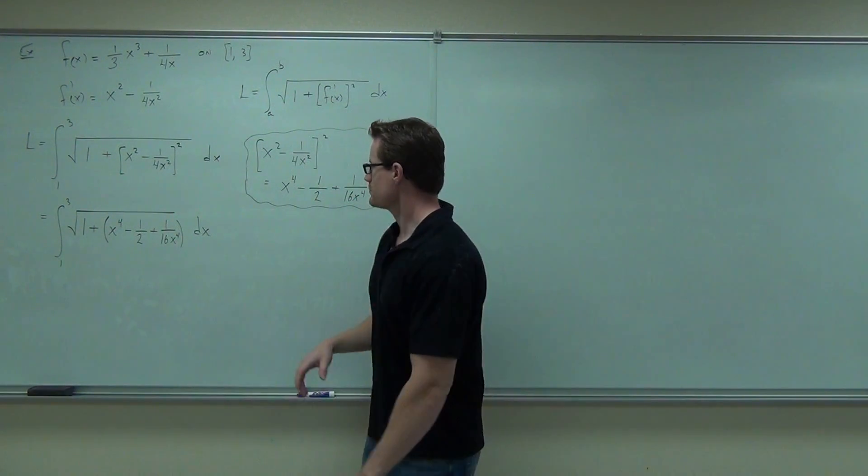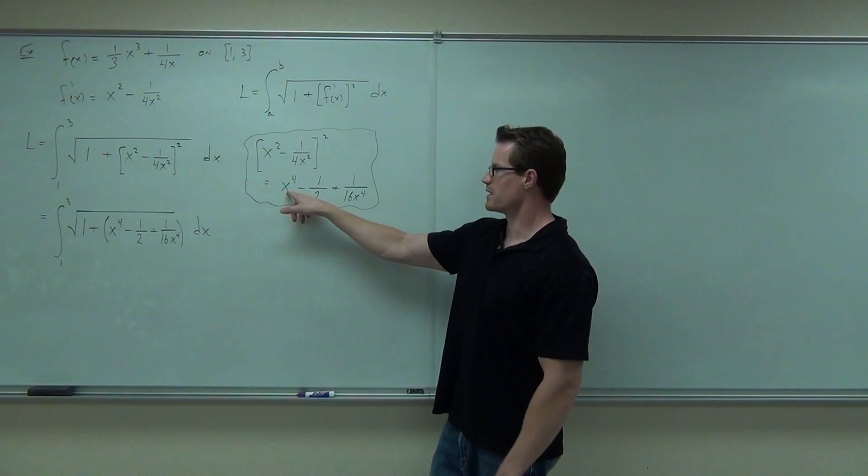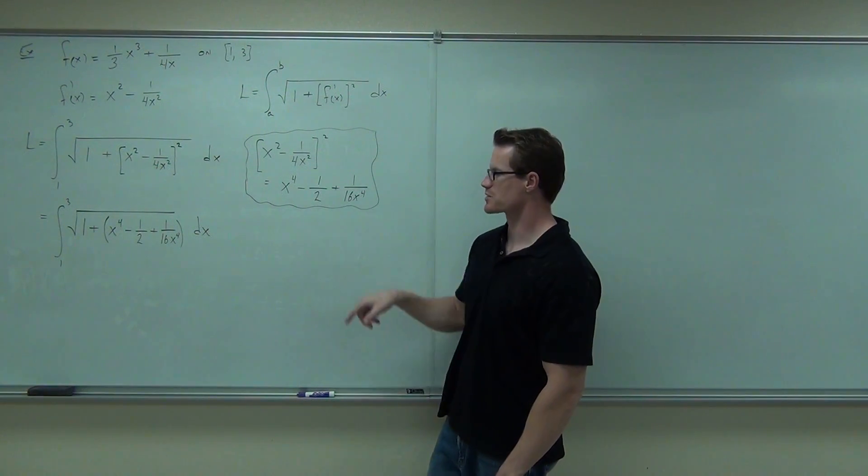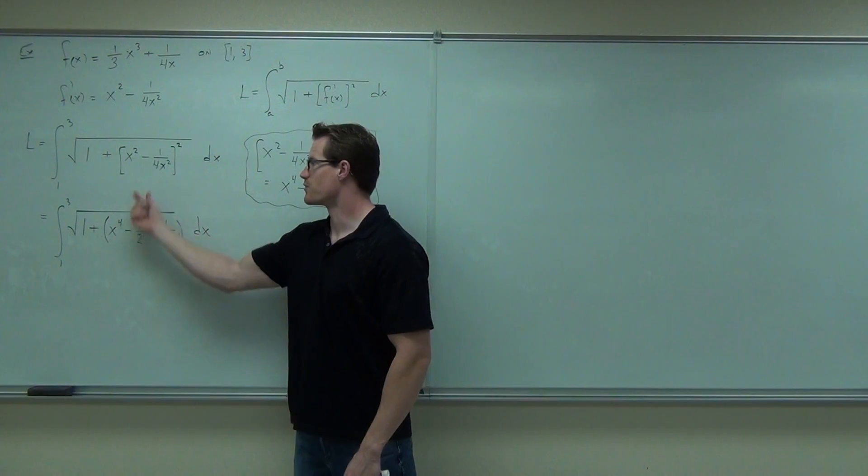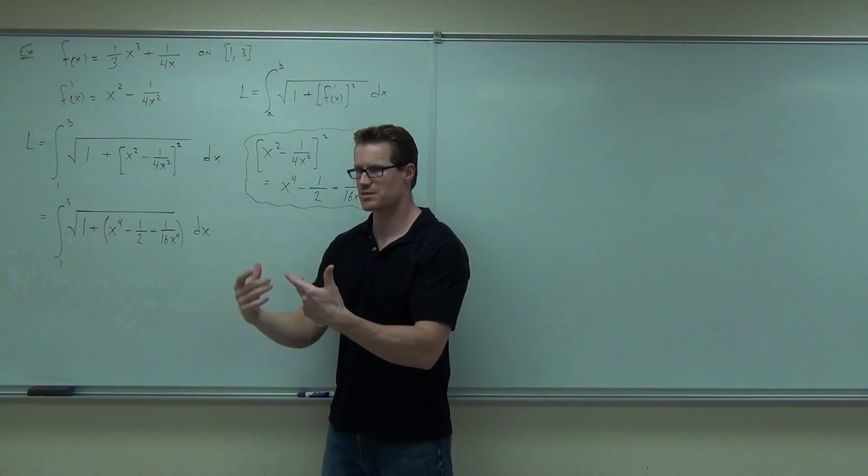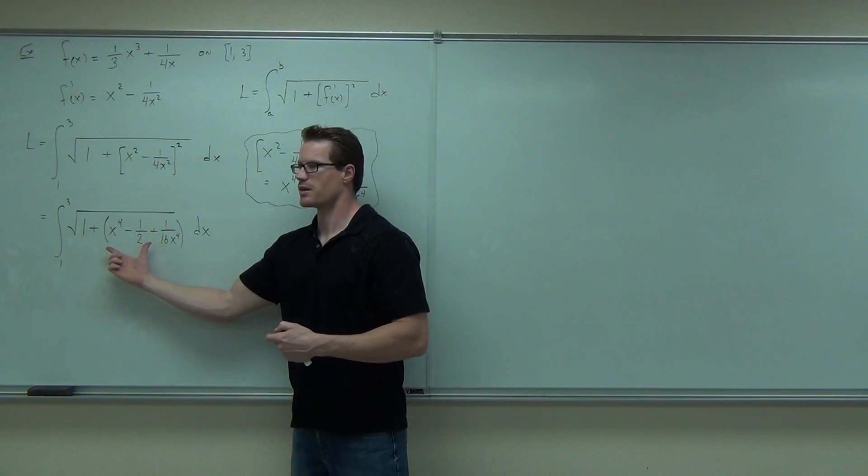So, we square this. We get x to the fourth minus one half plus one over 16x to the fourth. So that's where that's coming from. We're just expanding that, just squaring it, distributing, combining some like terms. You're going to get this thing.